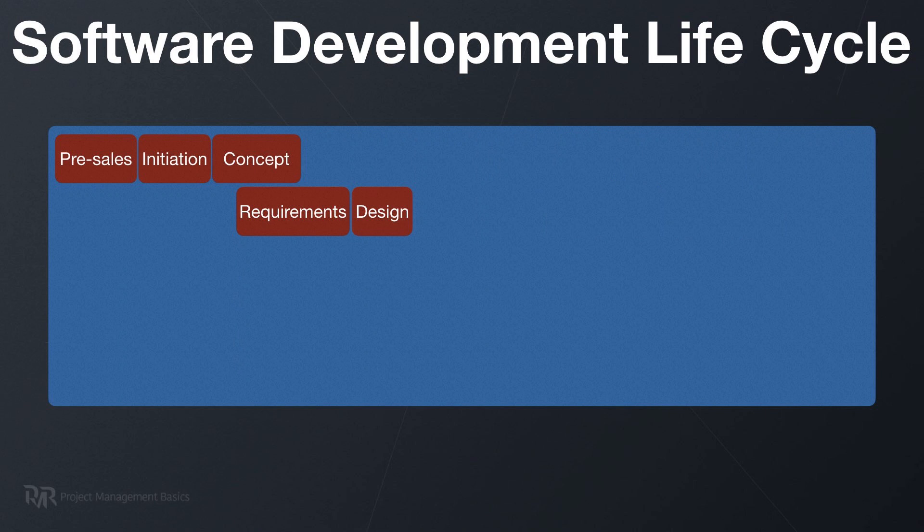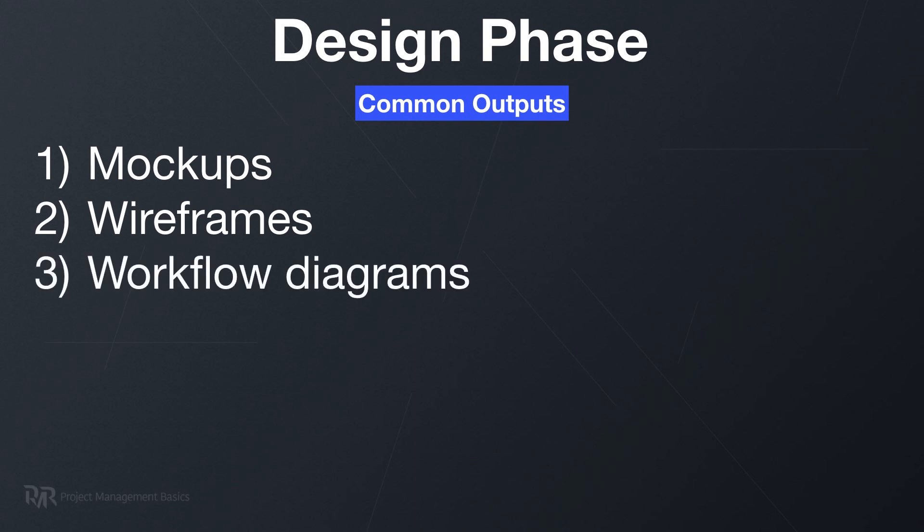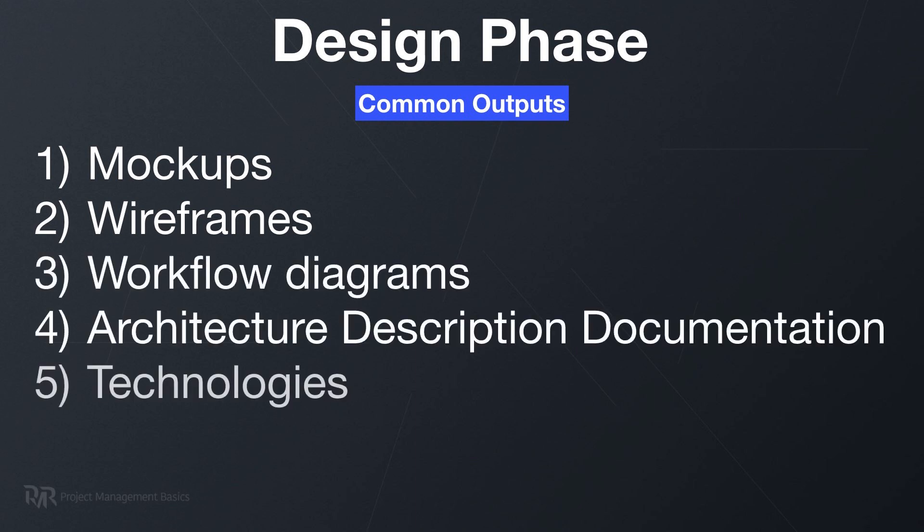Once you have requirements, you'll move into the design phase. There are at least two aspects here: technical architecture and UI/UX design. If you didn't follow the design-first approach, you do it here; otherwise, you finalize your designs in this phase. During this phase, you need to analyze the collected requirements, then develop an architecture that will support them, and also create a user interface that will make the application or service usable. The results of this phase are mockups, wireframes, workflow diagrams, architectural description documentation, lists of technologies, frameworks, and libraries.